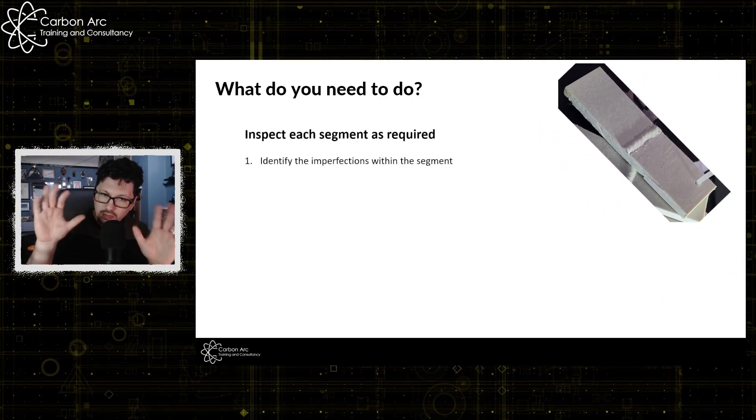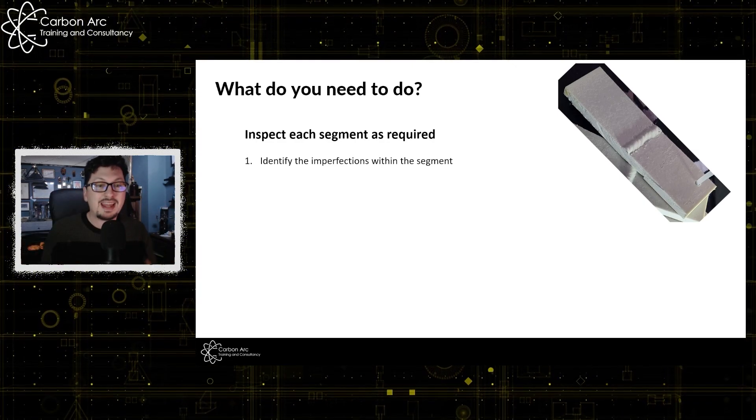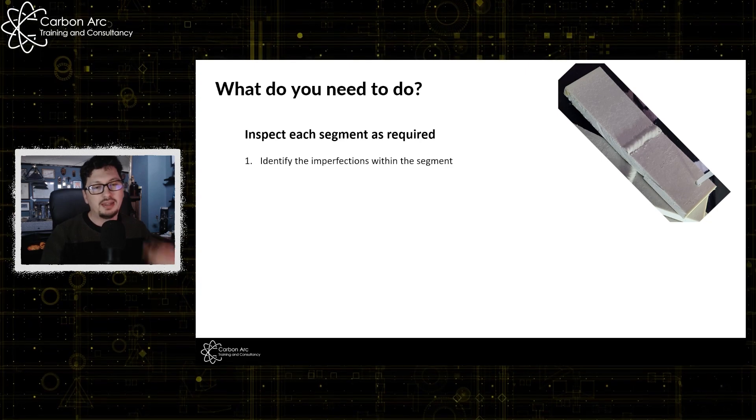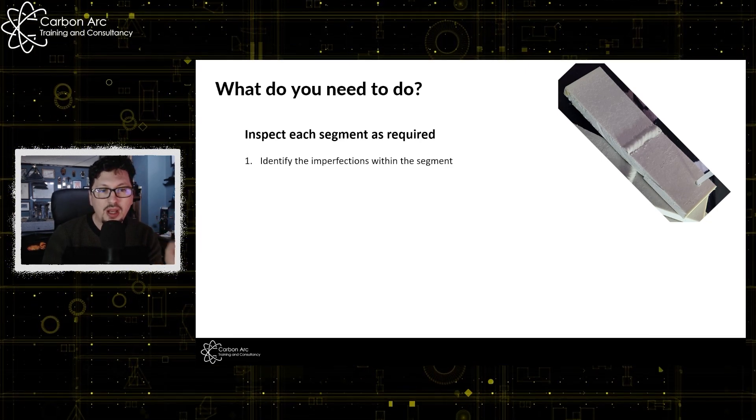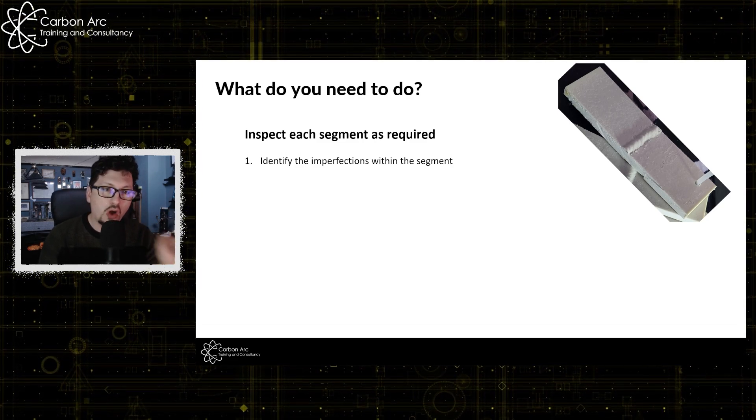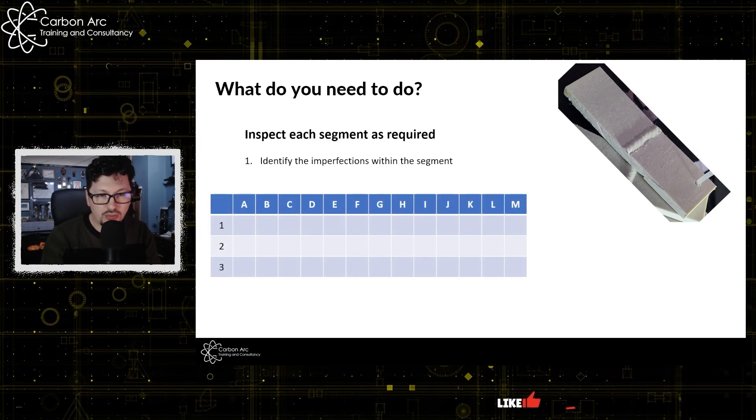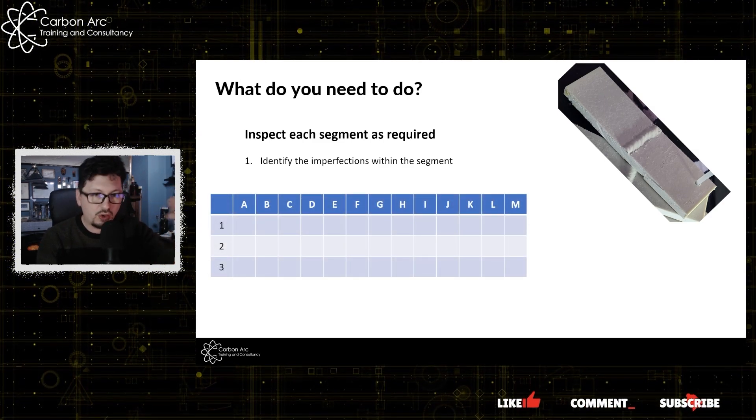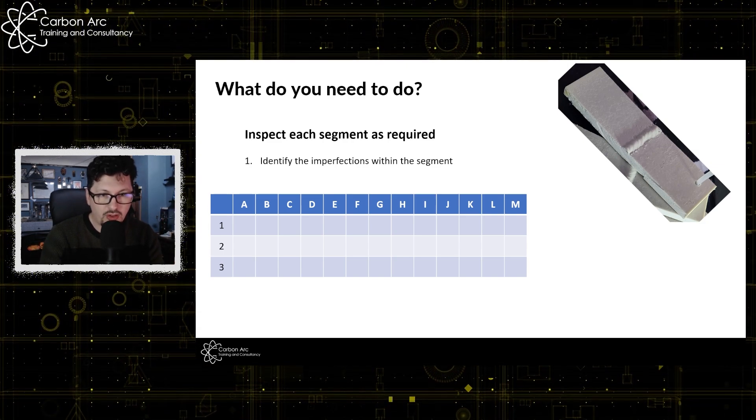So if we zoom in on mine here at the top, the first one's going to be to identify those imperfections. Now, the way this will work is you will have a sheet which will display all of the defect names along with a letter. And your table will look something like this. So we can see we've got questions one, two, and three down the bottom.